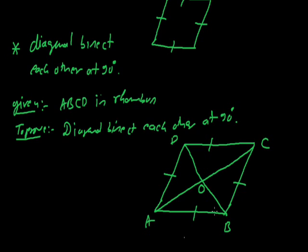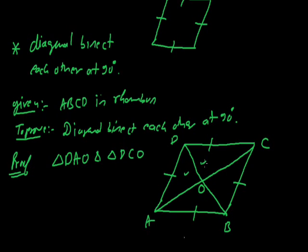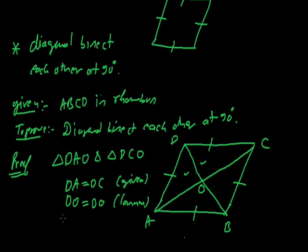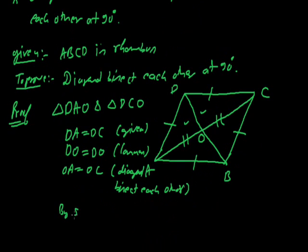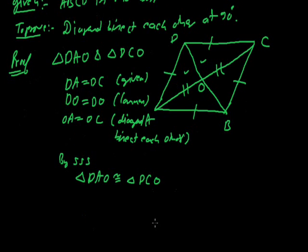Since rhombus is given, all sides are equal. To prove this, we consider triangle DAO and triangle DCO. In these two triangles: DA equals DC — given, ABCD is a rhombus; DO equals DO — common; OA equals OC — because in a parallelogram the diagonals bisect each other. So by SSS criteria, triangle DAO is congruent to triangle DCO.